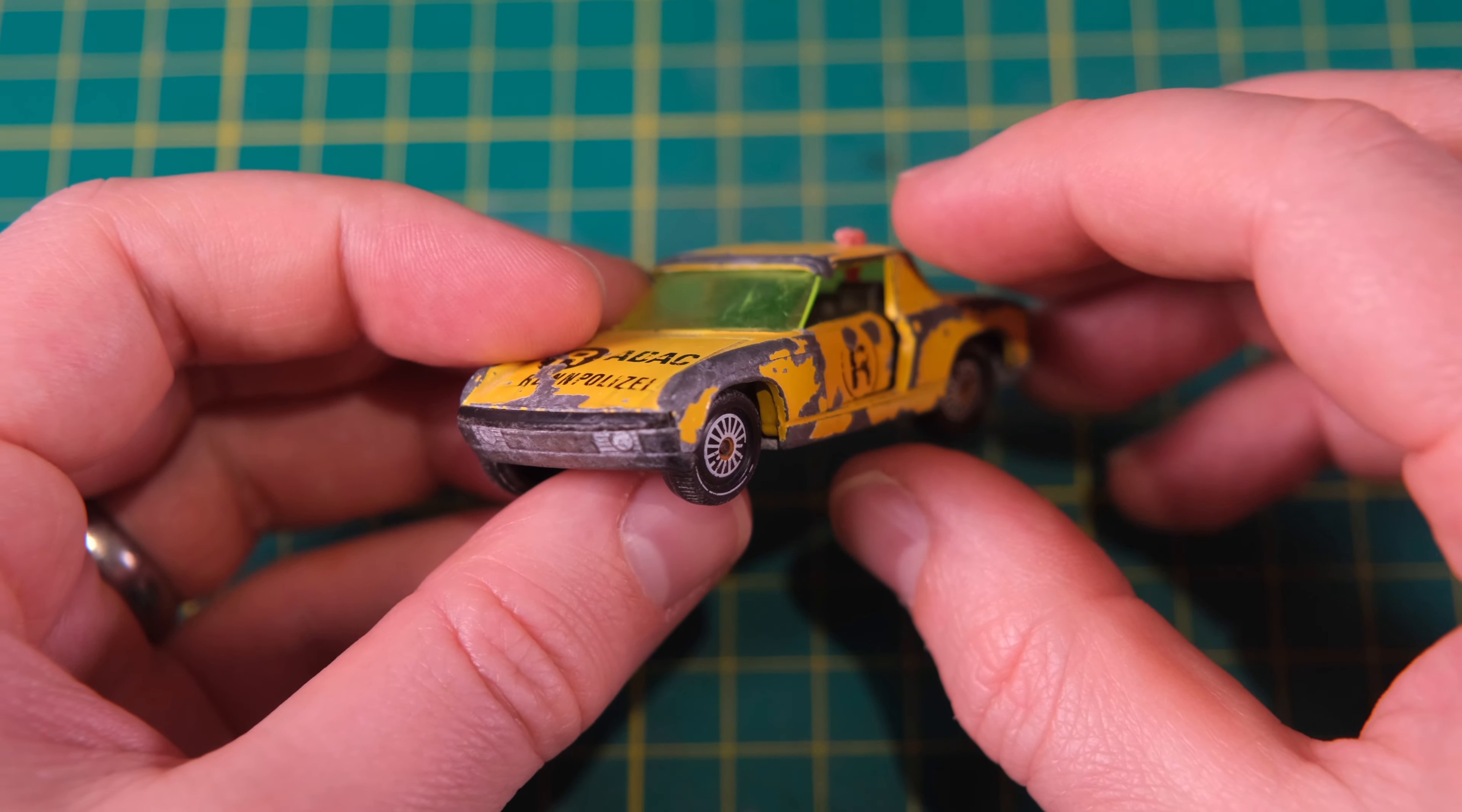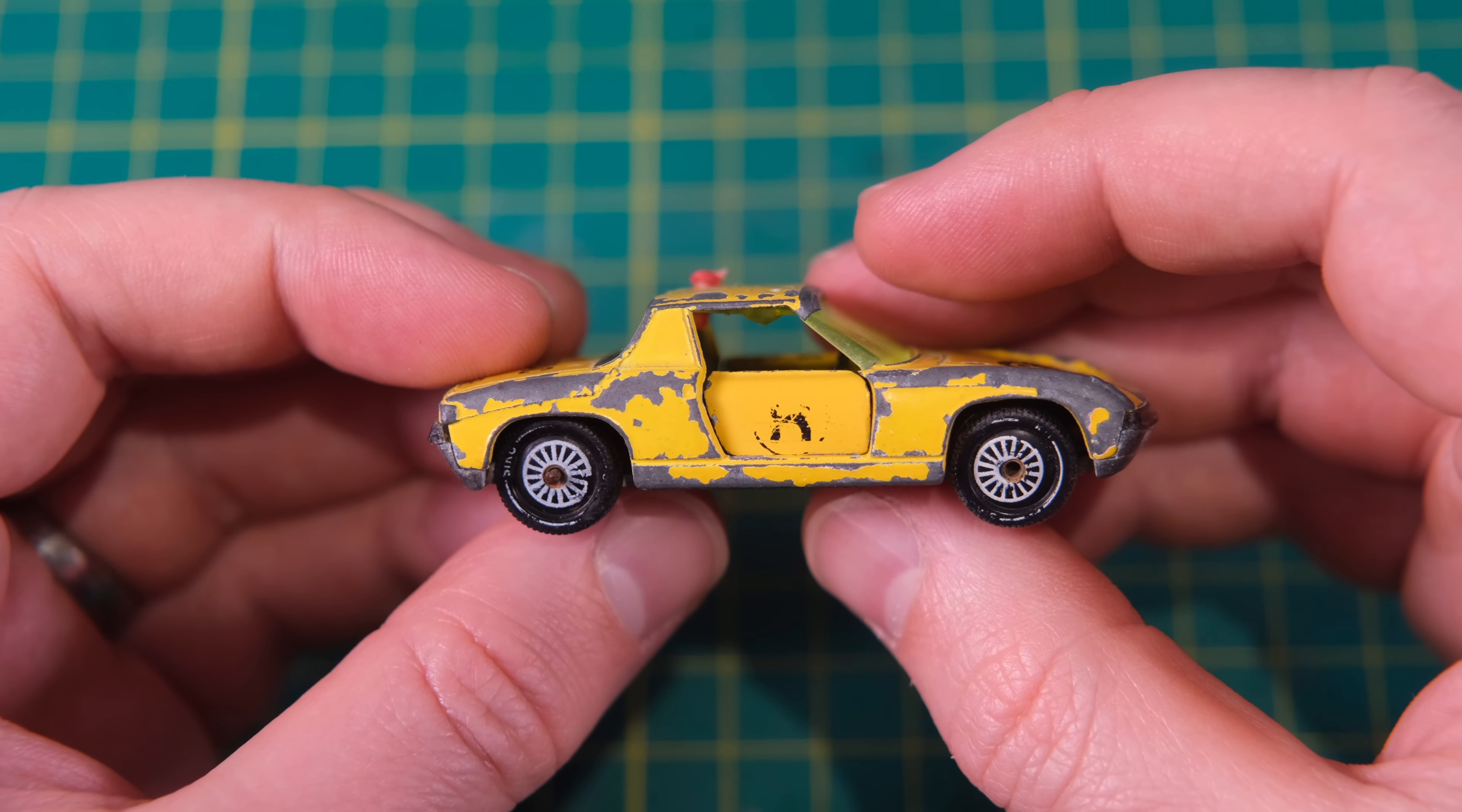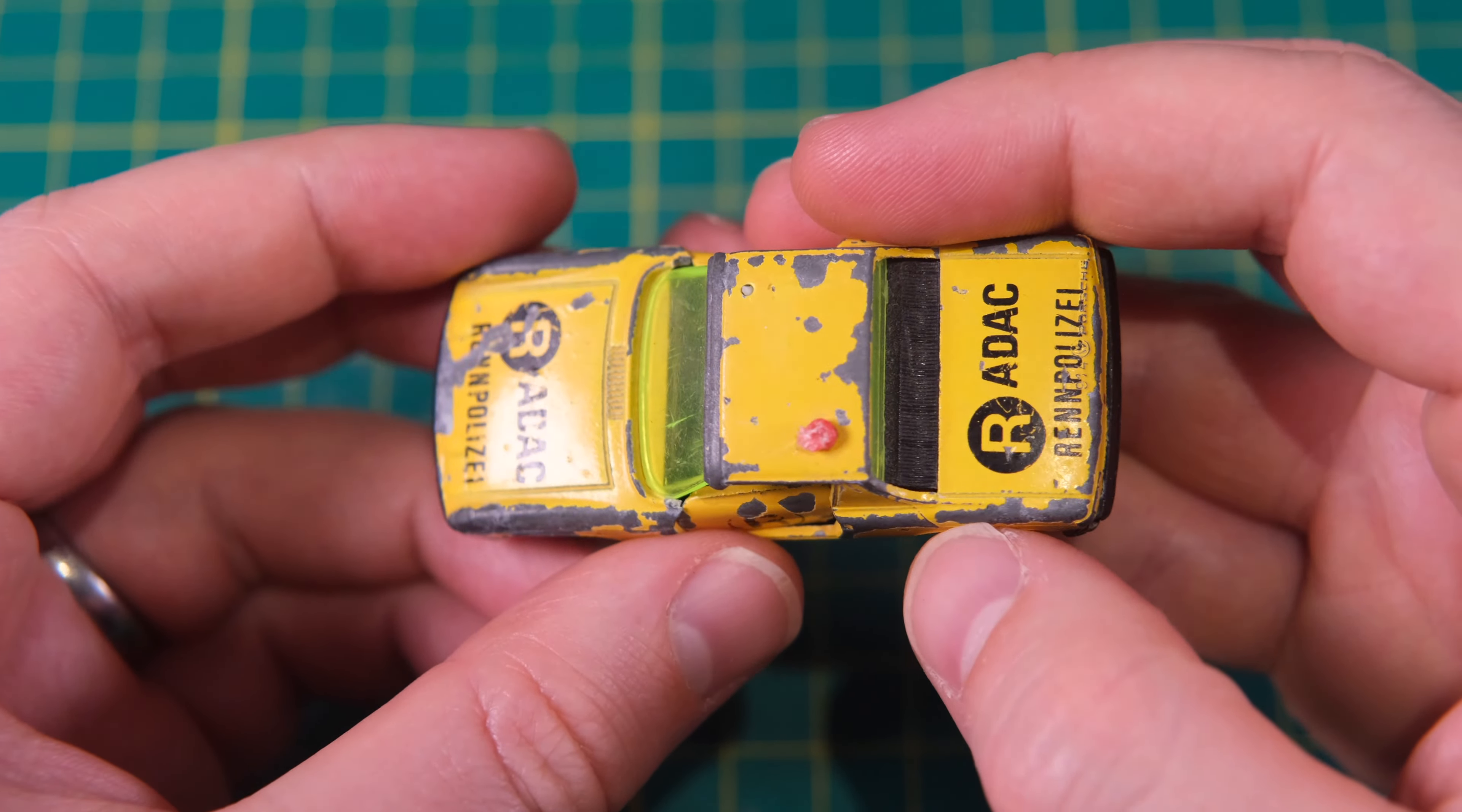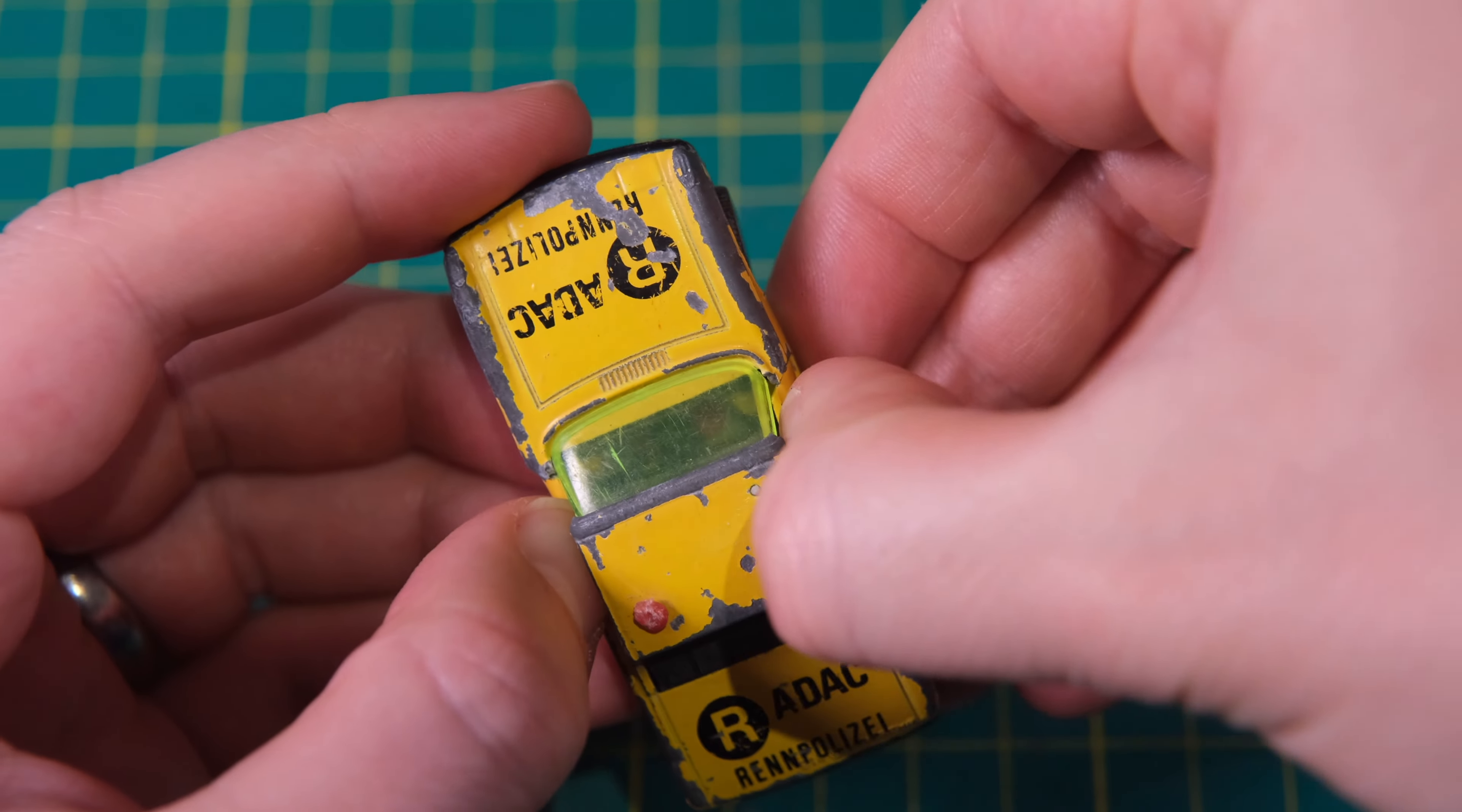Hello and welcome to Diecast Restos and to this really rather beaten-up Siku Porsche 914. This has certainly seen better days. It's missing its A-pillars, the axles are badly bent, the doors are totally misaligned, and its paint and bodywork are in a poor state.